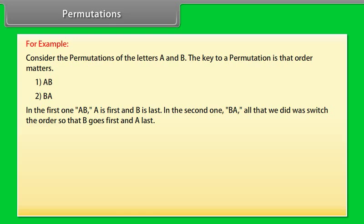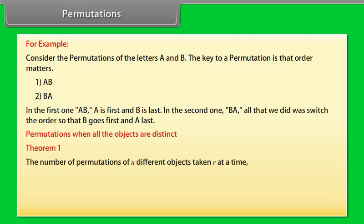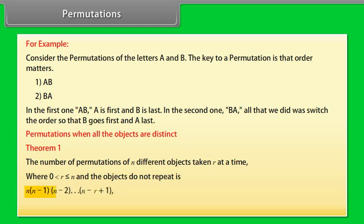Permutations when all the objects are distinct — Theorem 1. The number of permutations of N different objects taken R at a time, where 0 is less than R is less than or equal to N and the objects do not repeat, is N into N minus 1 into N minus 2 up to N minus R plus 1, which is denoted by NPR.